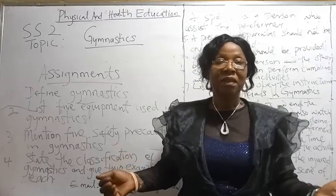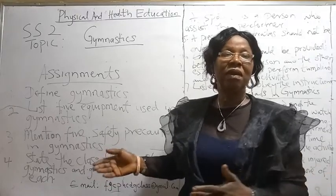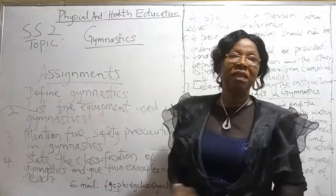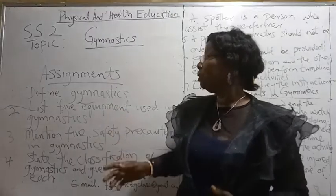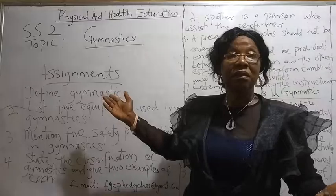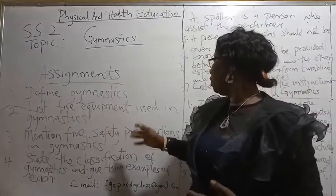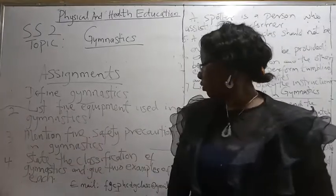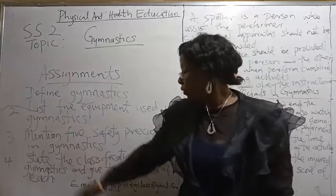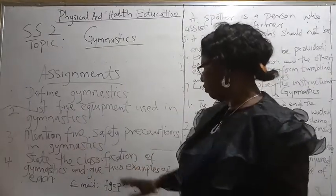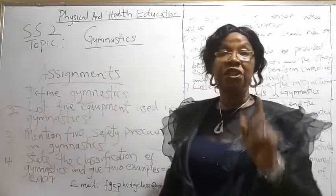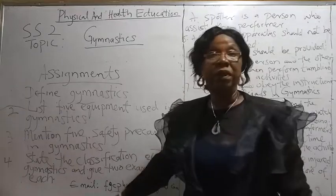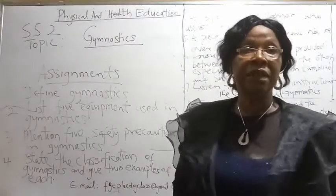My dear students, this is the end of our lesson for today. I'm sure you'll be able to answer the following assignment: 1. Define gymnastics. 2. List five equipment used in gymnastics. 3. Mention five safety precautions in gymnastics. 4. State the classification of gymnastics and give two examples of each. Submit the assignment to the email on the board. Thank you.